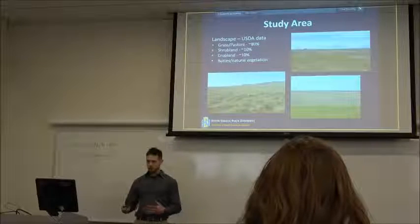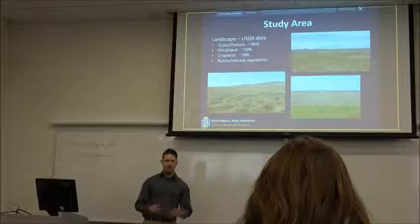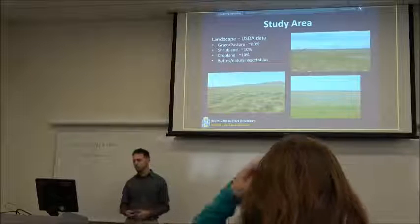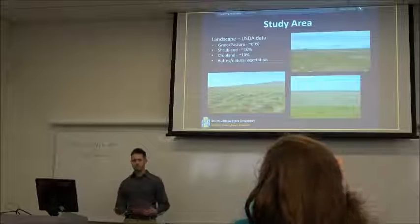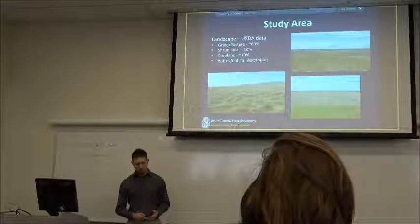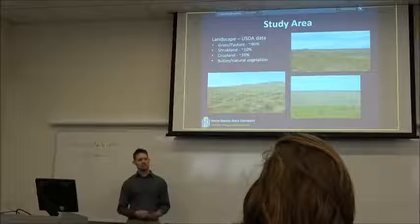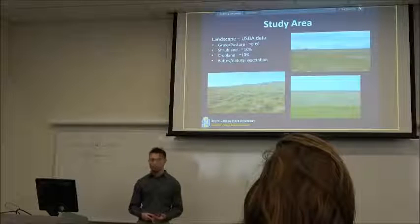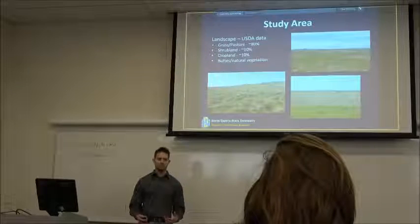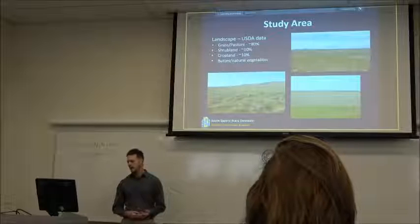Data from the USDA indicates that grass pasture land makes up about 80 percent of the habitat vegetation type that we find in Butte County. And we usually identify grass and pasture land as mixed short grass prairie in western South Dakota. Shrub land, which includes our sagebrush communities, and crop land such as winter wheat and alfalfa fields, each make up about 10 percent of that remaining habitat type.